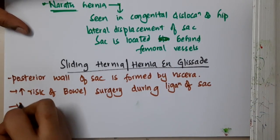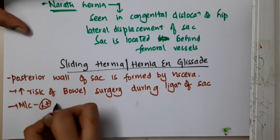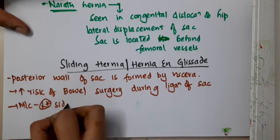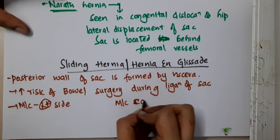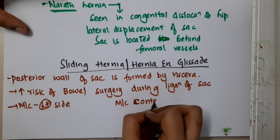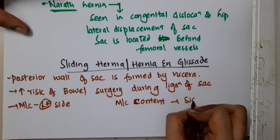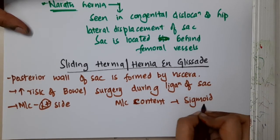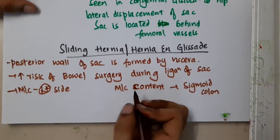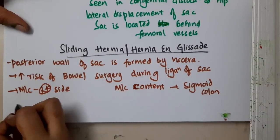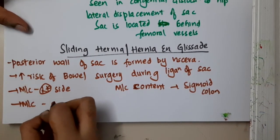Sliding hernia is more commonly seen on the left side. The most common content of sliding hernia is the sigmoid colon, and it is more commonly seen in males.